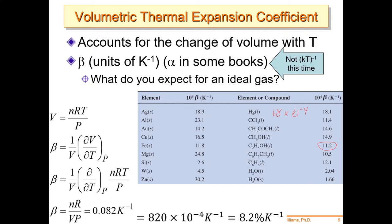Mercury thermometers are really great until a student stabs one into their hand — which happened here years ago. They were trying to put a thermometer into a rubber stopper without following procedure. The proper way: first, have an appropriately sized hole in the stopper; second, put a little glycerin in there so the thermometer can slide through. Without the glycerin, he twisted it, it jabbed, and cut tendons in his thumb requiring surgery. The lesson: you are forbidden from doing things not in the lab procedure. Solids have volumetric expansion in units of 10⁻⁶, much smaller than liquids.